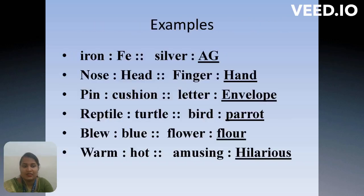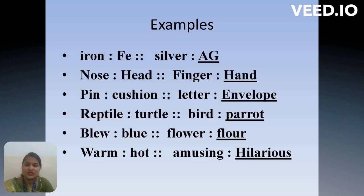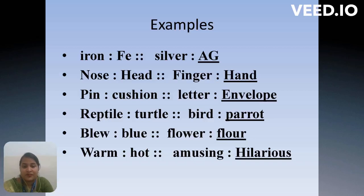More examples: iron is Fe — a chemical term written in shorter form. Same way, silver is Ag. Nose is to head as finger is to hand — only in the hand we have fingers, and in the head we have a nose. Pen is to cushion as letter is to envelope. Reptile is to turtle as bird is to parrot. Blue and flower — the same or similar words. Warm is to hot as amusing is to hilarious.